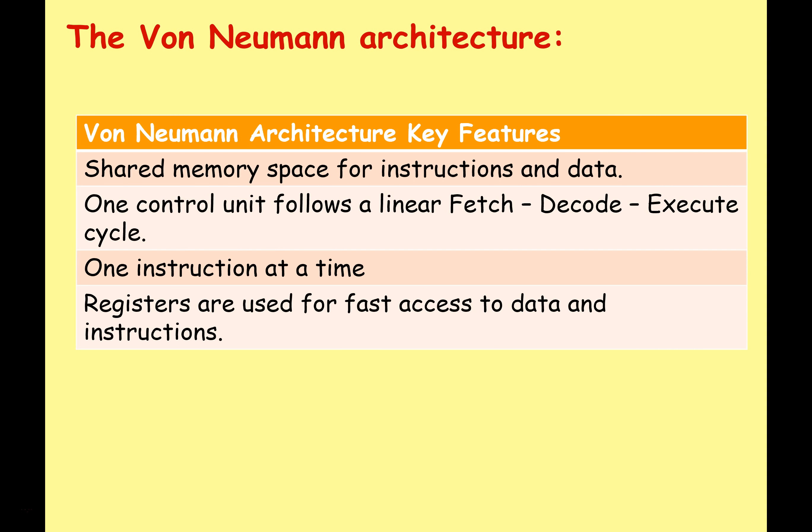Here are some key features of the von Neumann architecture for your exam. You need to know what it is, what the key features are, and be able to compare it to other types of architecture. Key features: shared memory space for instructions and data; one control unit that follows a linear fetch, decode, execute cycle — an instruction is fetched, decoded, then executed — done sequentially, one instruction at a time; and registers are used for fast access to data and instructions, built into the processing unit — fast but small, saving time going back and forth to main memory.